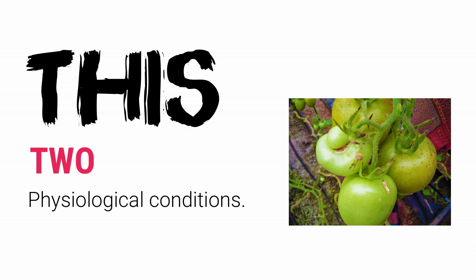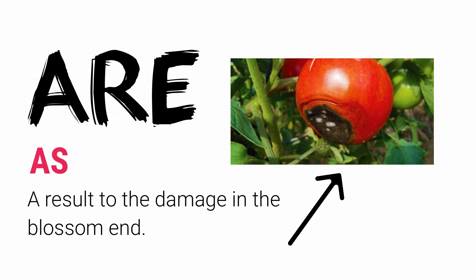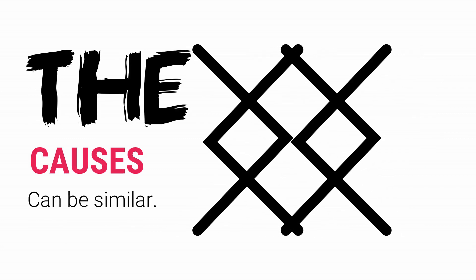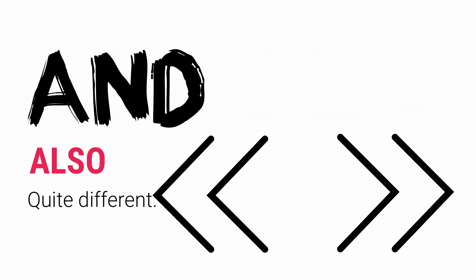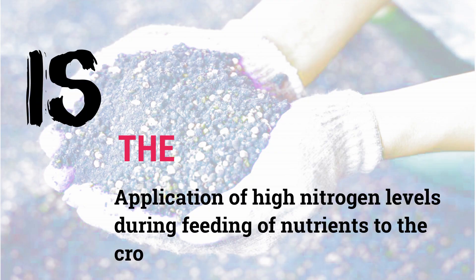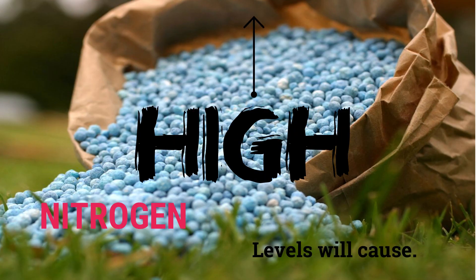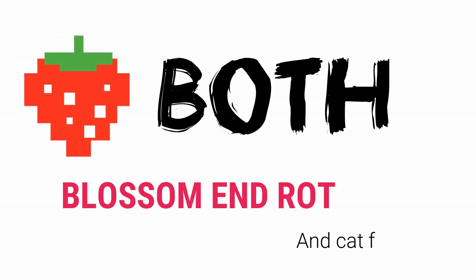The truth of the matter is that these two physiological conditions are as a result of damage to the blossom end. The causes can be similar and also quite different. One similar cause to both these conditions is the application of high nitrogen levels during feeding of nutrients to the crops. High nitrogen levels will cause both blossom end rot and cat facing.